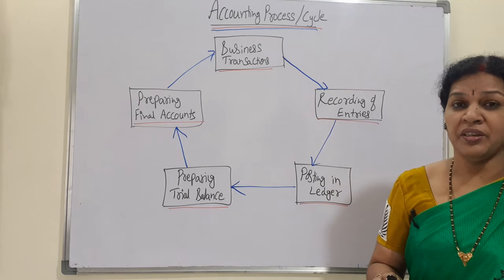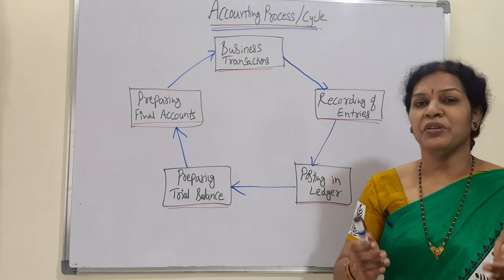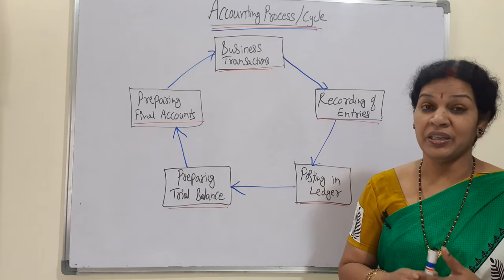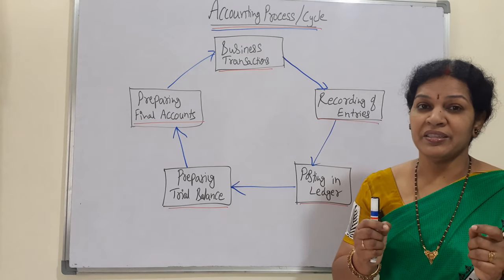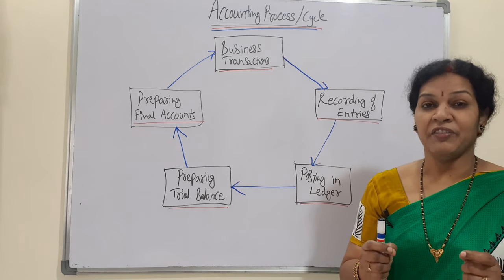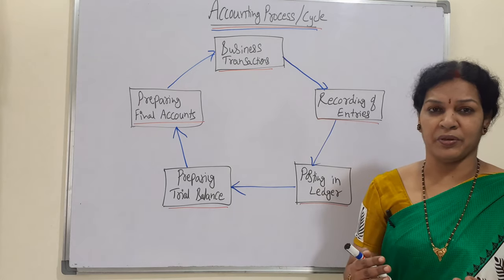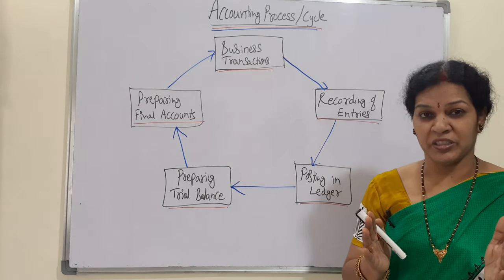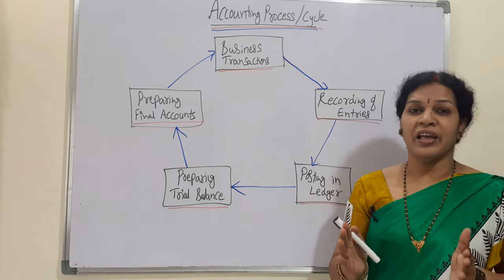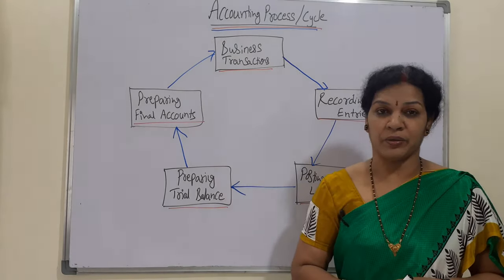Once ledger posting is complete, the next process is preparing the trial balance. Trial balance is the base and a very important element of financial accounting. If the trial balance is properly prepared, we can prepare any kind of accounts as per our requirement. Once the trial balance is posted properly, the next stage is preparing final accounts.